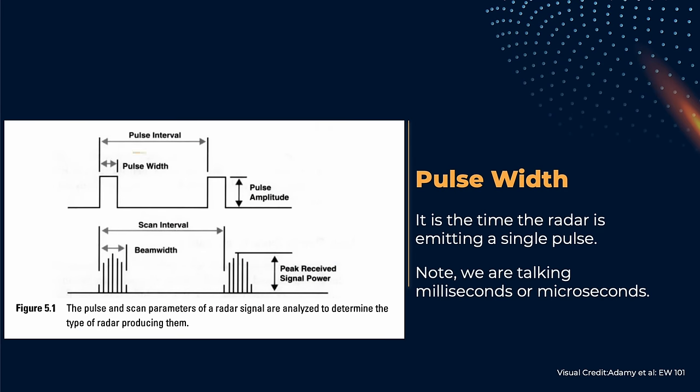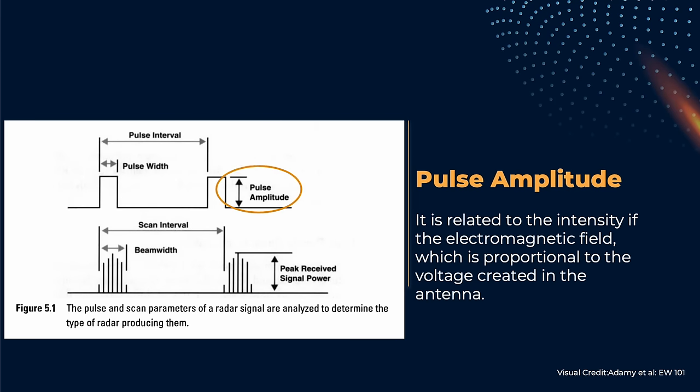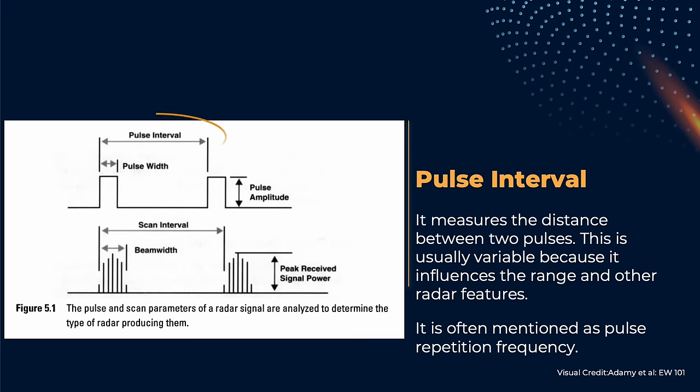Then, from a single pulse, it is possible to determine the pulse width. Notice that width in this case means duration. Depending on the radar type, this could not be a constant, but then you will have a variation pattern, and that will be part of the electronic signature. From a single pulse, it is also possible to determine the pulse amplitude, which is related to the radar emitted power, and it will be important later for determining the beam width. When the second pulse is received, it is then possible to determine the pulse interval. This is also known as pulse repetition frequency, and every radar can vary it, because it influences the capability of detecting a target.